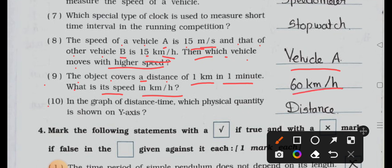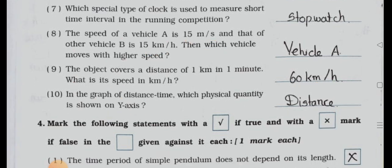Number 10: in the graph of distance time, which physical quantity is shown on y-axis? Answer is the distance.